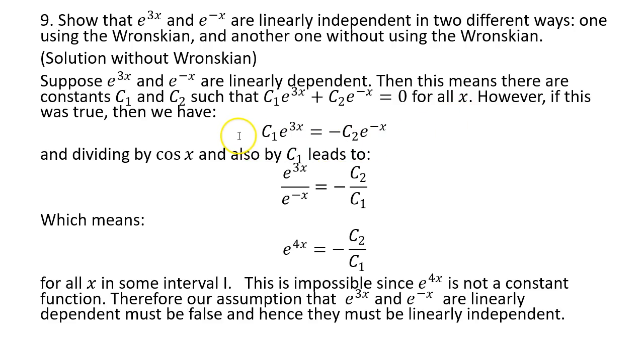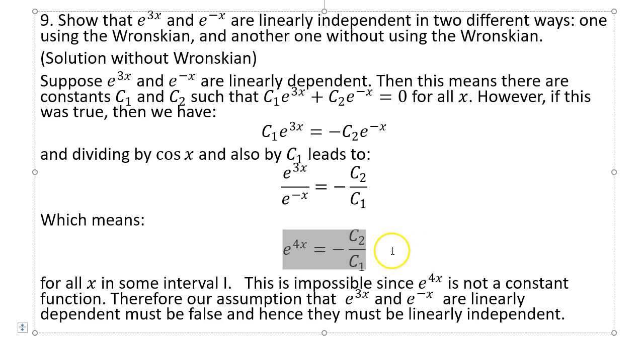We move this term to the right and divide, and we get this algebraic equation here. Now do you find something strange about this? On the left side you have an exponential function. On the right side you have a constant function. And we're trying to say that these two should equal on an interval. Now is that possible? No, because this is increasing whereas this is not - this is a constant function. So it's impossible for an increasing function to be equal to a constant function. Therefore there's a contradiction.